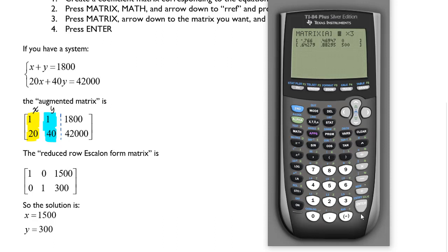We have two rows and three columns, so our 2 by 3 matrix is still fine. We'll enter one row first: 1, 1, 1800, and the second row will be 20, 40, 42,000.